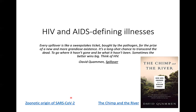COVID-19, the name of the disease caused by the virus SARS-CoV-2, is also zoonotic in origin. If you click on the link here, it will take you to a Nature paper that covers the likelihood of it originating in bats or in the pangolin. And this link will take you to an Amazon link for The Chimp in the River if you feel like reading more about the origins of HIV.